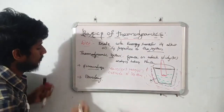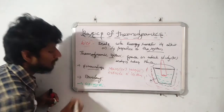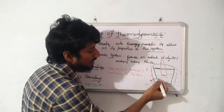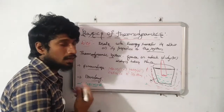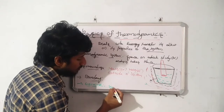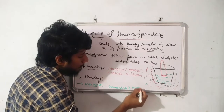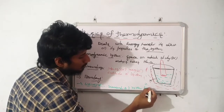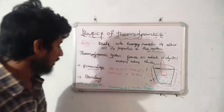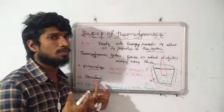With the help of the boundary, we analyze how much heat transfers from the system to the surroundings. One more important definition is the universe. The universe is nothing but the surroundings and the system together. The simple addition of surroundings and the system together is called the universe.